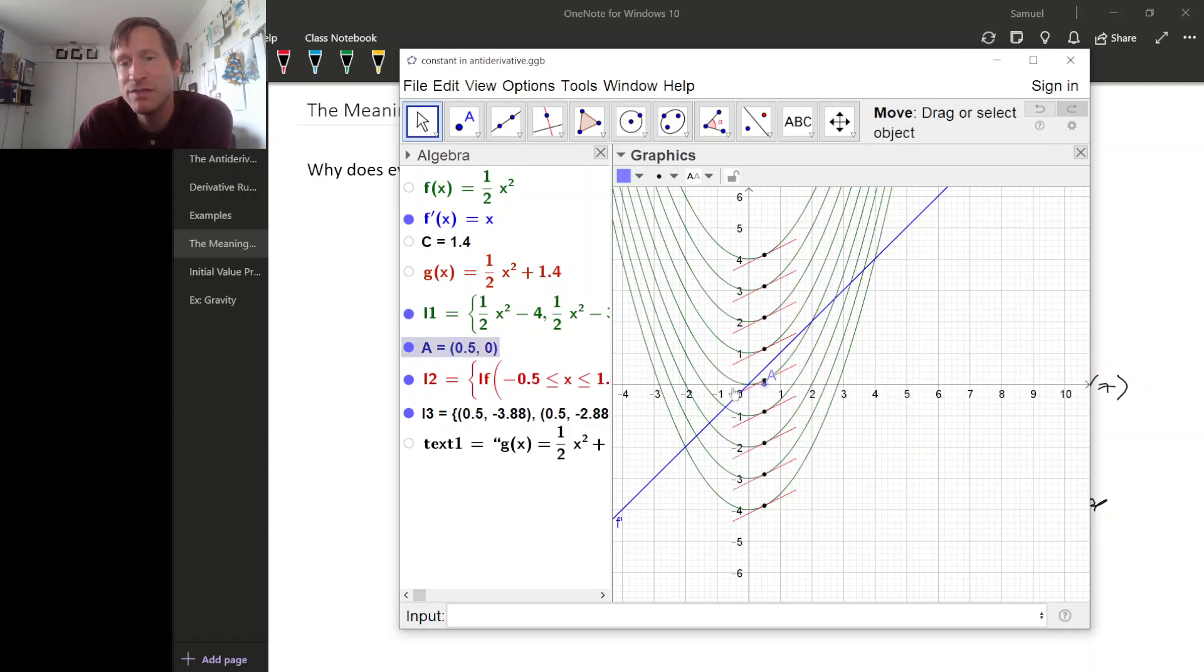And that means that all of these functions have the same derivative function, because the slope of their tangent line is always the same at every x-value. And indeed, this is set up so that the derivative of all of these green graphs is this blue graph.